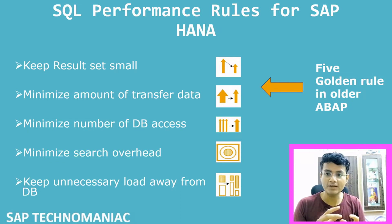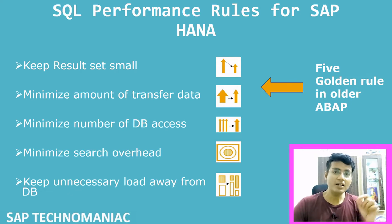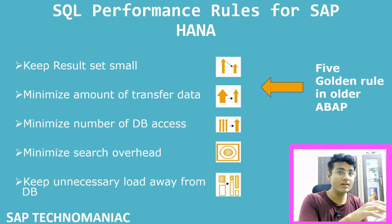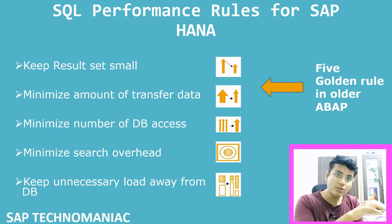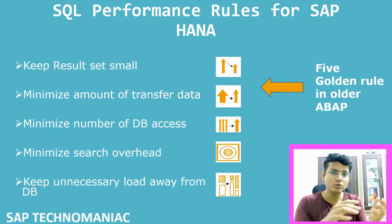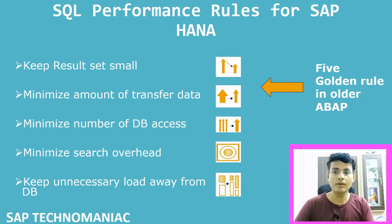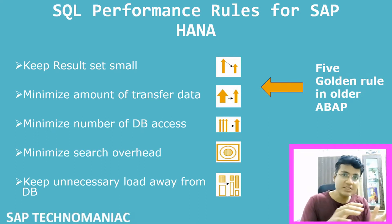The advantage of keeping the result set small: first, we need less memory at the database level to process the query. Second, when we transfer data from the database to the application layer, there is less network overhead. If the data is less, there will be less work for the network as well.